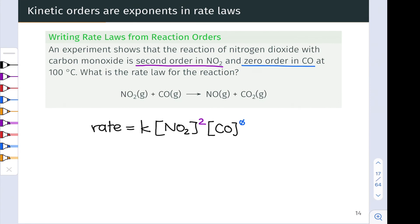Now, a number raised to the zero power is simply one, so we can rewrite this right hand side of the equation as k, the rate constant, times the concentration of NO2.